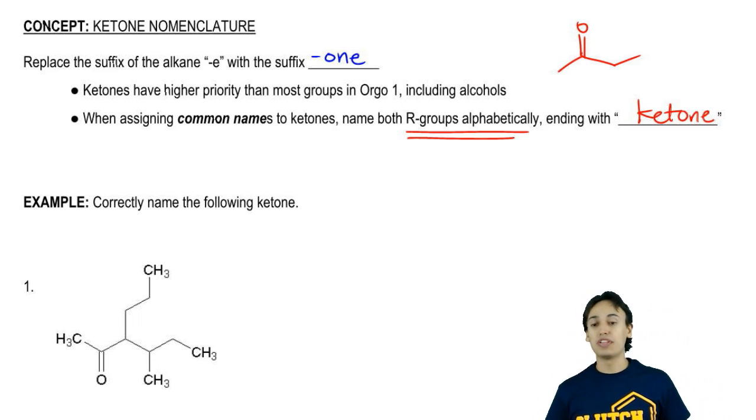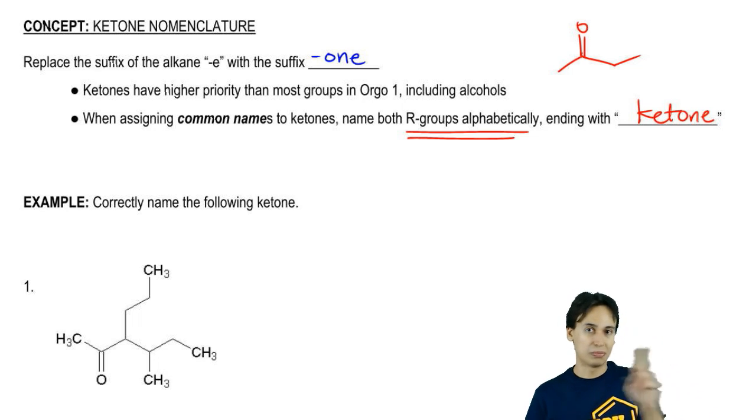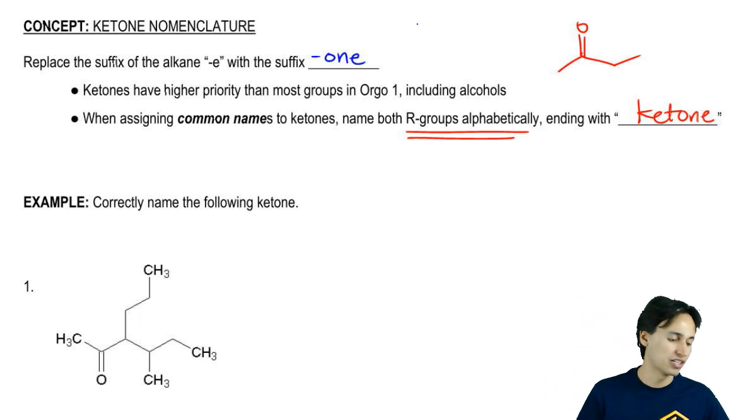In IUPAC, the name of this would be, well, it started off as a butane. Now it's going to be a butanone and you have to name the location because I need to know exactly where that ketone is. It could be anywhere. So I'm going to name this as a 2-butanone.